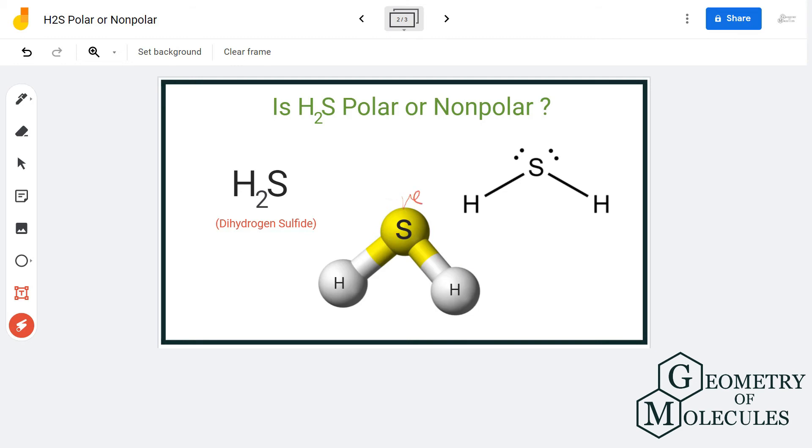H2S is a slightly polar molecule. Although the difference in electronegativities of sulfur and hydrogen is not more than 0.4, and it may seem like a nonpolar molecule, the lone pairs on the sulfur atom and the creation of poles in this molecule are what make H2S a slightly polar molecule.